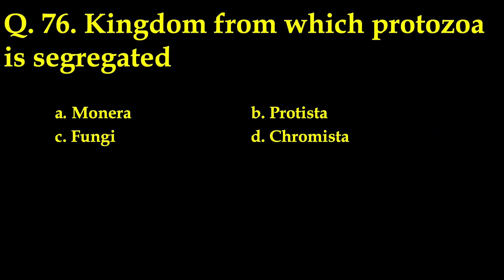The first question: which kingdom is Protozoa segregated from? Out of the four options — Monera, Protista, Fungi, and Chromista — the correct answer is Protista. For more details, you can see my YouTube video on fungi nomenclature and classification.